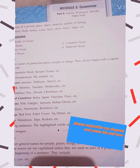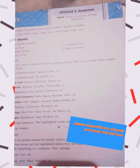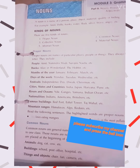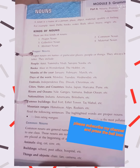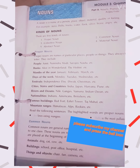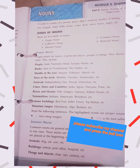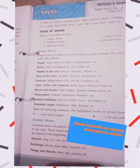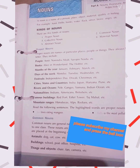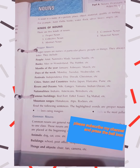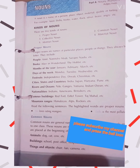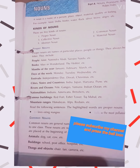Proper Nouns always begin with a capital letter. They include people, books, months of a year, days of a week, festivals, cities, states and countries, rivers and oceans, nationalities, famous buildings, and mountain ranges. Examples of people: Amit, Narendra Modi, Sarojini Naidu, etc.